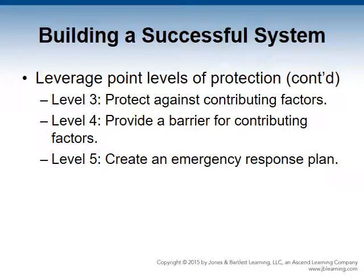Level three is to protect against contributing factors, which could be related to your actions in the environment. Level four is providing a barrier for those contributing factors — much like level two, it uses a barrier assuming that the event will occur again and that proactive measures must be taken, with reference to level three actions guiding development of plans for this level. Finally, level five is to create an emergency response plan — the final level ensures that a contingency plan is in place in the event that all other layers of protection have failed.